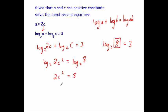Dividing by 2 gives c² = 4. Since c is a positive constant, c = 2 (not ±2).